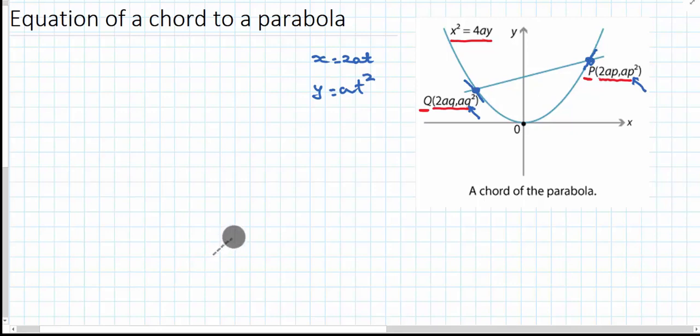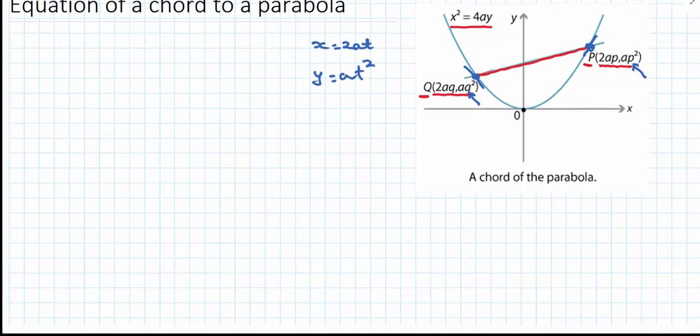To find the equation of any line we need a point—well I've got two of them—and we need a gradient. I'm looking for the gradient of the chord.